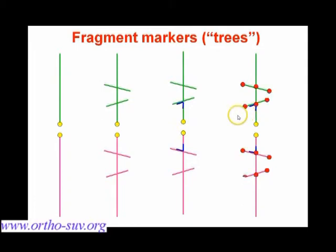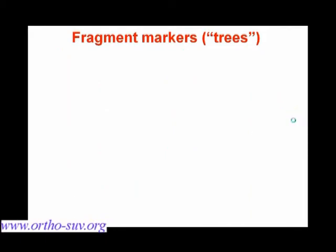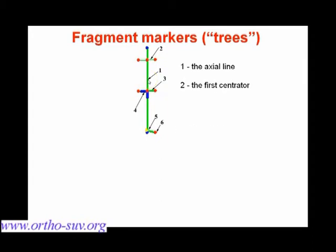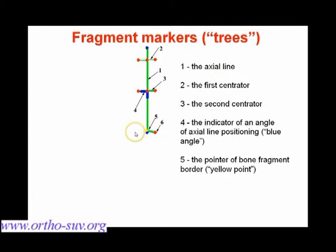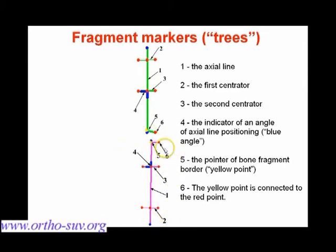We will speak about the blue angles a little later. Each tree has six red points placed in the horizontal lines and in the middle of these lines — they are used to find the center of bone fragments. Each tree also has one red ball at the end of the line connecting with the yellow point. So, to summarize: each tree has an axial line, a first centrator, a second centrator with a blue angle, a yellow point marking the fragment border, and a red point connected to the yellow point by a horizontal line.